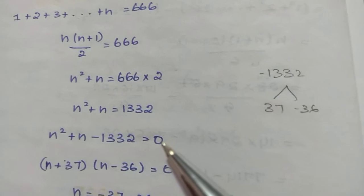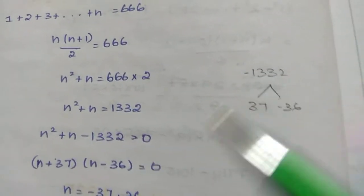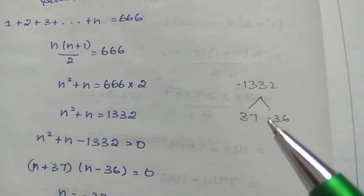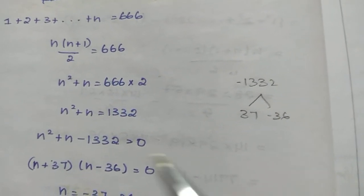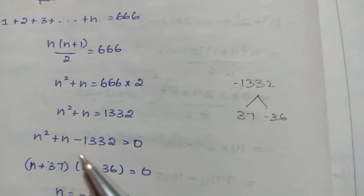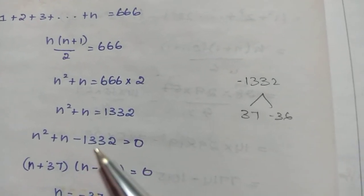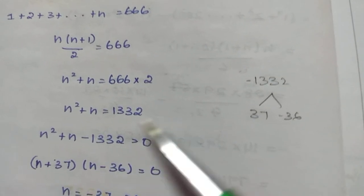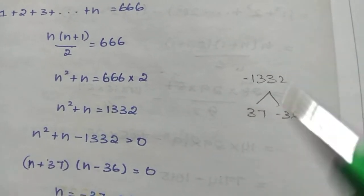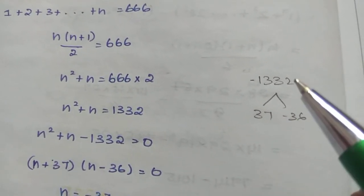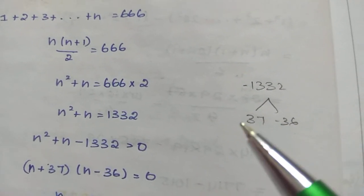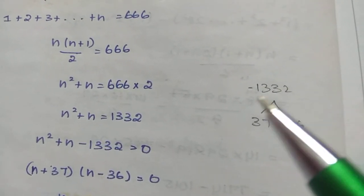Factorize the quadratic equation n² + n - 1332. Finding factors: checking 1300, 40 × 40 = 1600, trying 30 × 13 = 390. Working through the factorization, we find the factors are 37 and 36, since 37 × 36 = 1332.